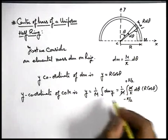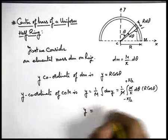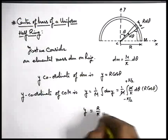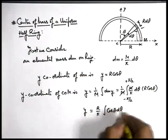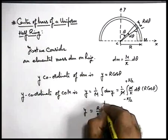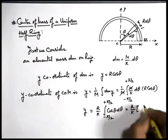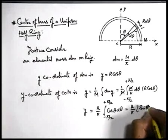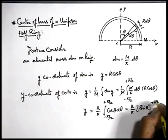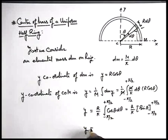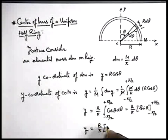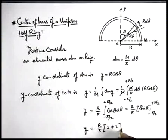In this situation this m gets cancelled out. On solving, y will be r/π times the integration of cos theta d-theta from -π/2 to +π/2. On integrating this will be r/π times [sine theta] from -π/2 to +π/2. If we substitute the limits this will give us r/π times [sin(π/2) - sin(-π/2)], which is 1 minus (-1), so it'll be 1 plus 1. The result will be 2r/π.